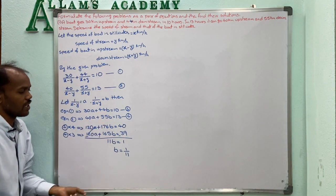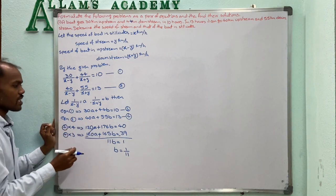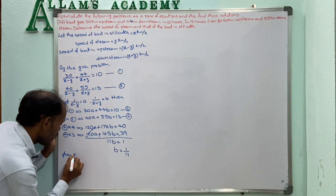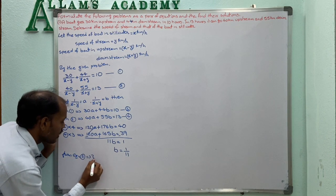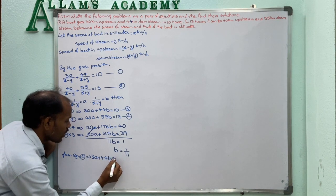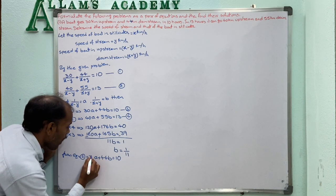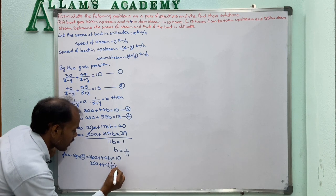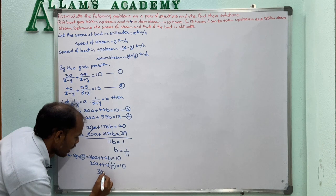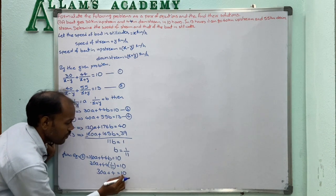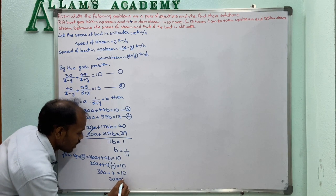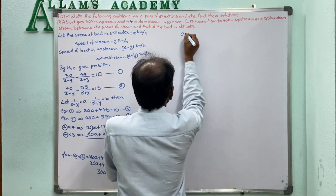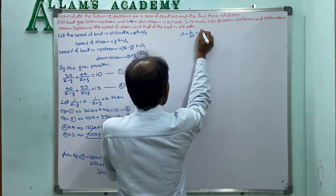Substituting B equals 1/11 into equation 3: 30A plus 44 × (1/11) equals 10, so 30A plus 4 equals 10. Then 30A equals 6, giving A equals 6/30 equals 1/5.